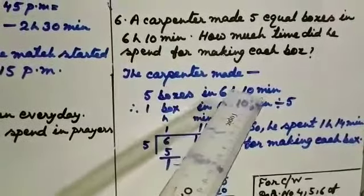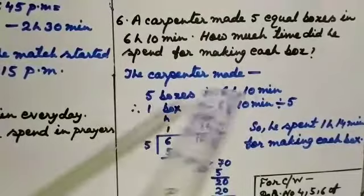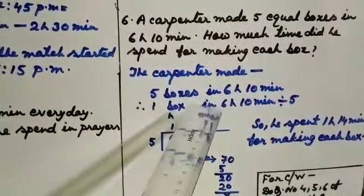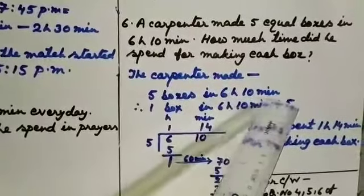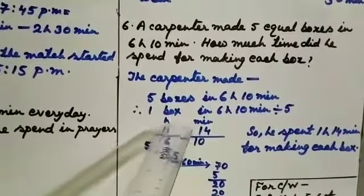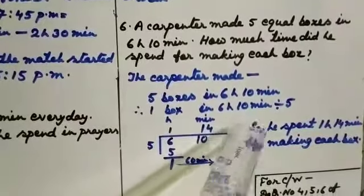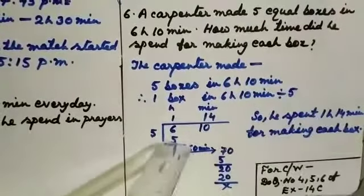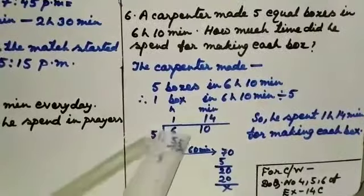A carpenter made, give a hyphen. This is headline and after that you will write: 5 boxes in 6 hours 10 minutes. Therefore 1 box in 6 hours 10 minutes divided by 5. Clear? Here you see the division. 5 ones are 5.